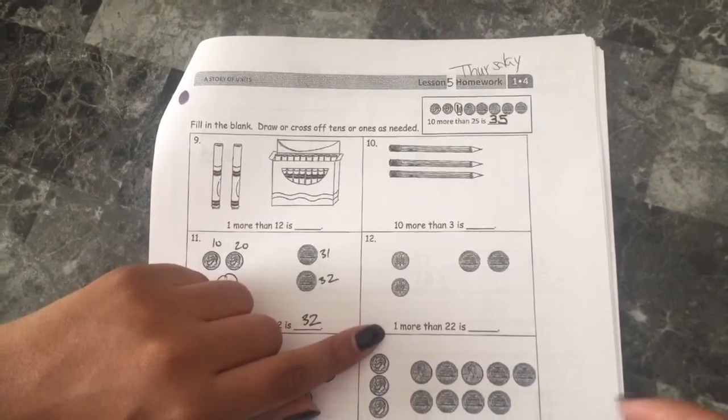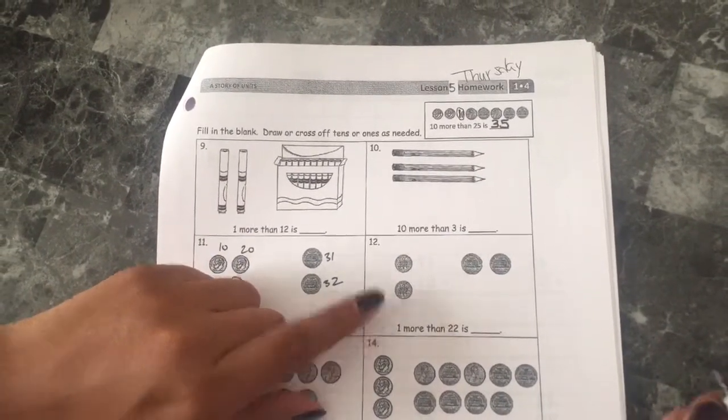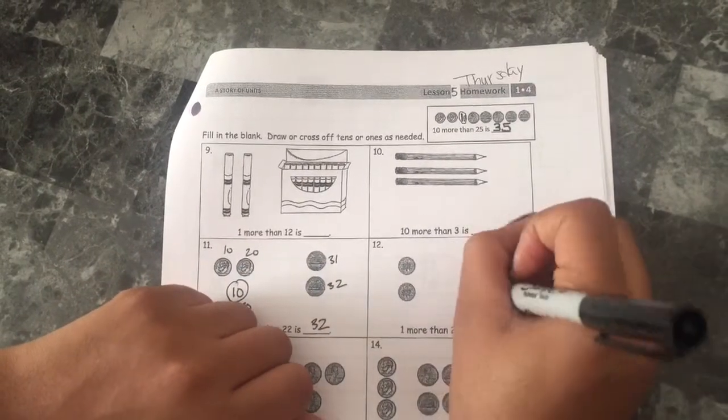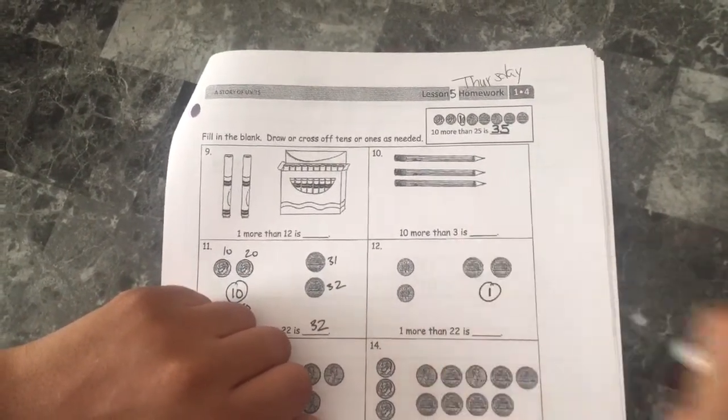One more than 22 is blank. You have your two dimes, you have your two pennies. To represent a penny you're just gonna draw a circle with the number one inside.